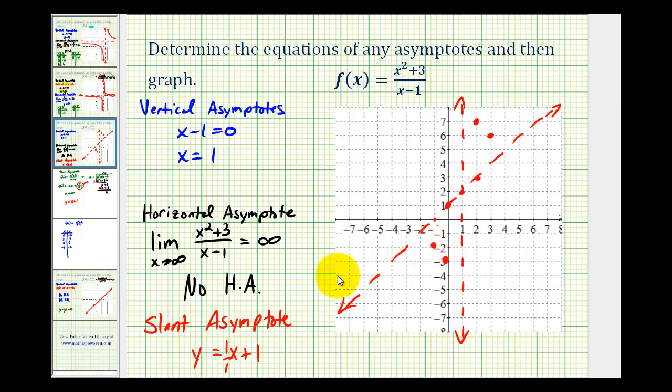That should be enough information to make a nice graph. We know it's going to pass through these points and then approach the vertical and slant asymptote. So it might look something like this for this piece, and this piece might look something like this. Here's a decent graph of our given function and the equations of the vertical and slant asymptotes.